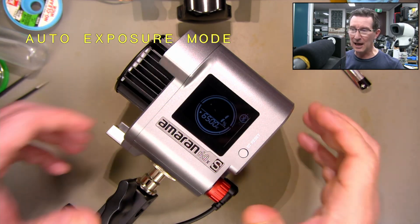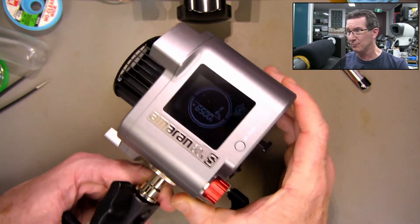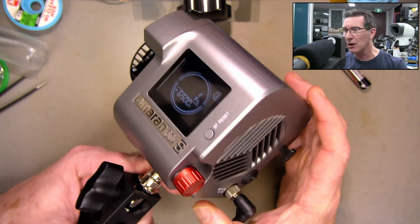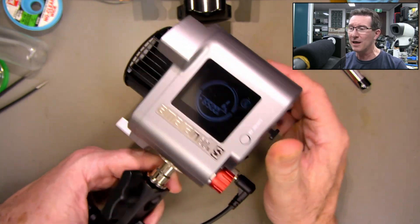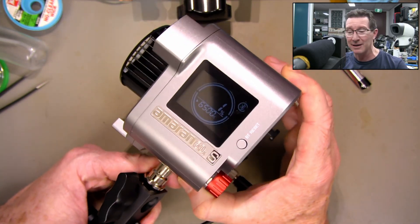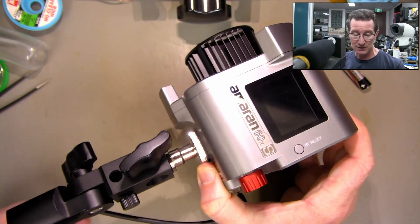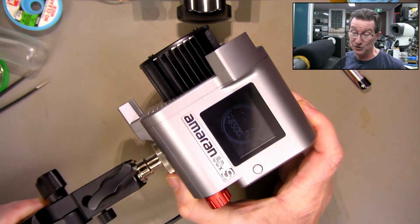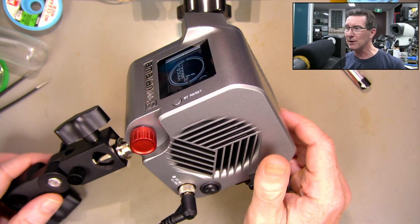So there you have it. That's the Aputure Amaran 60XS. Probably one of the best brand name studio lights on the market. So yeah, very cool bit of kit. I've now got a whole heap of lab lighting now. It's very flexible. I can do all sorts of jazz. Not that expensive, actually, for a brand name studio light like this. Absolutely incredible.